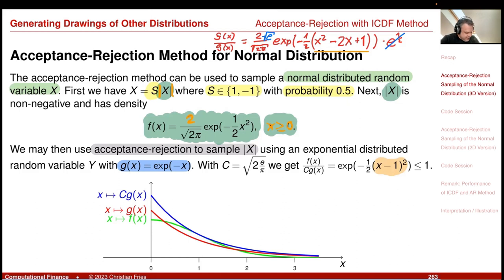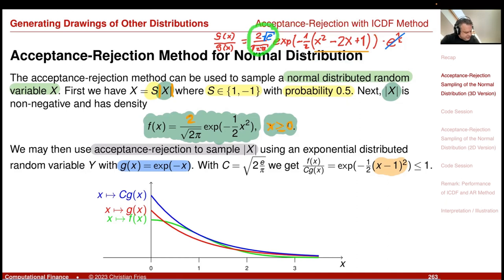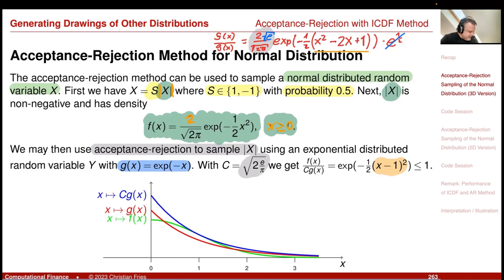I can apply the acceptance-rejection sampling theorem. This leads to my condition for u: is u less or equal to exponential of minus one-half (x−1)²? If this is the case, I accept the point; otherwise I throw it away. So x squared minus 2x plus 1 is (x−1)², and the acceptance condition is u ≤ exp(−½(x−1)²).